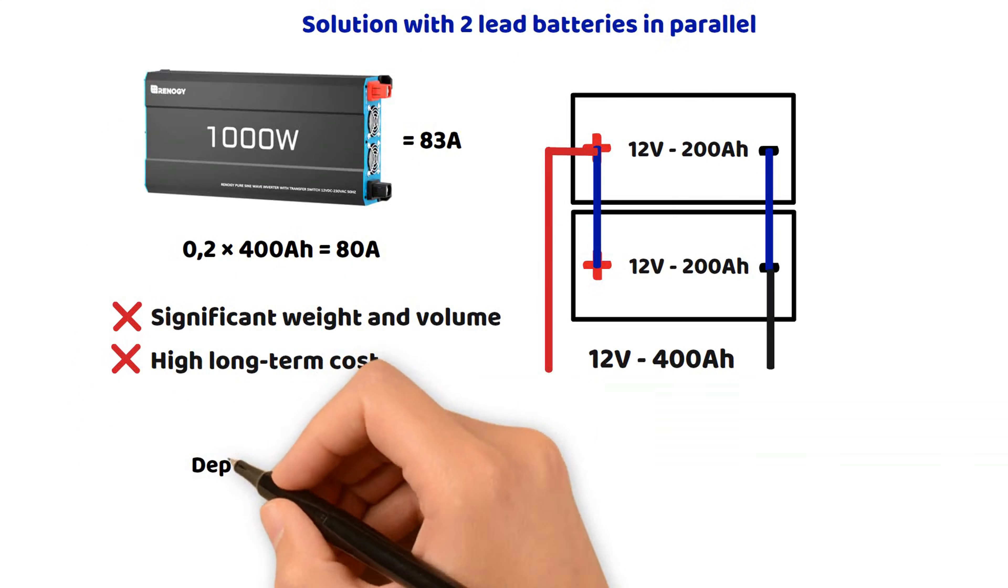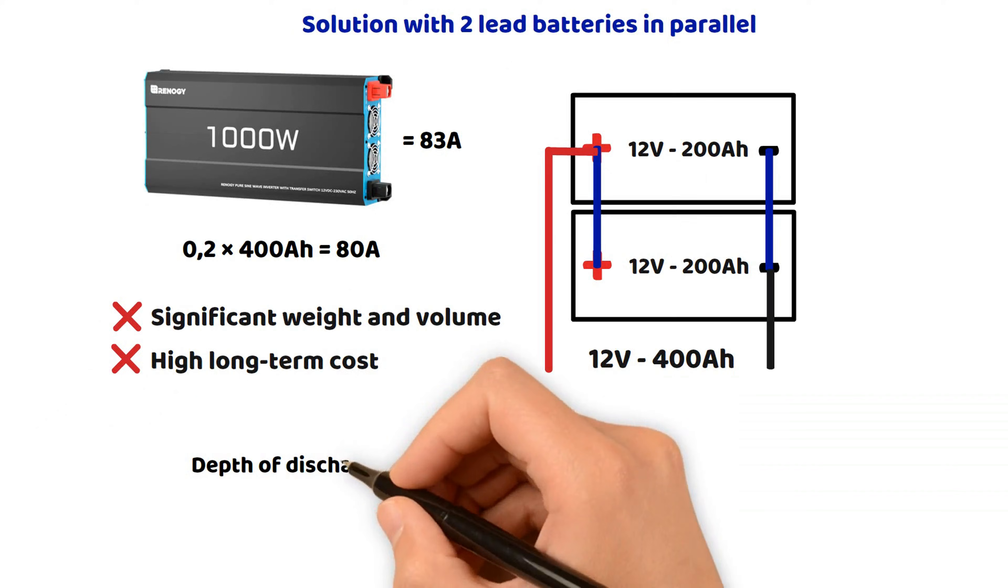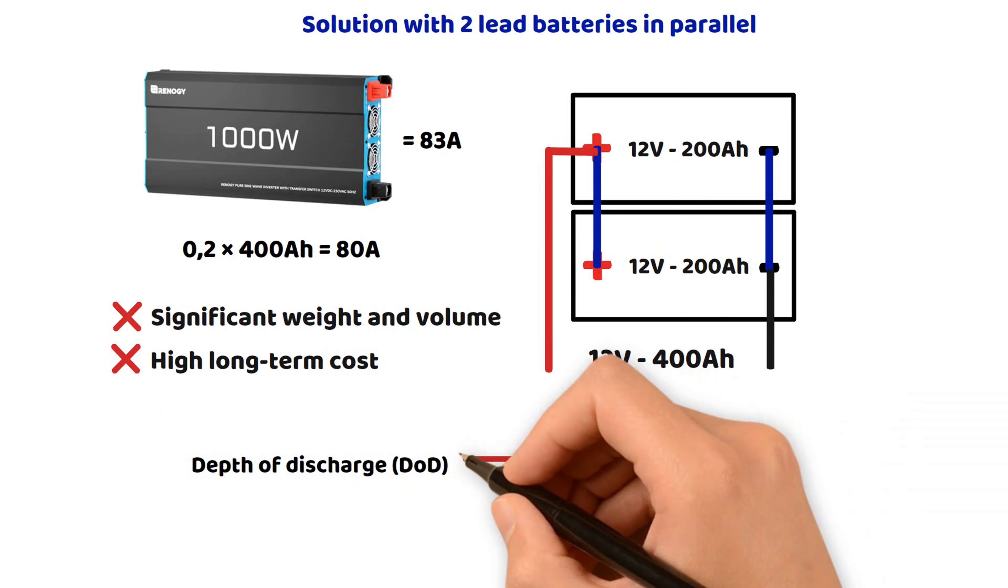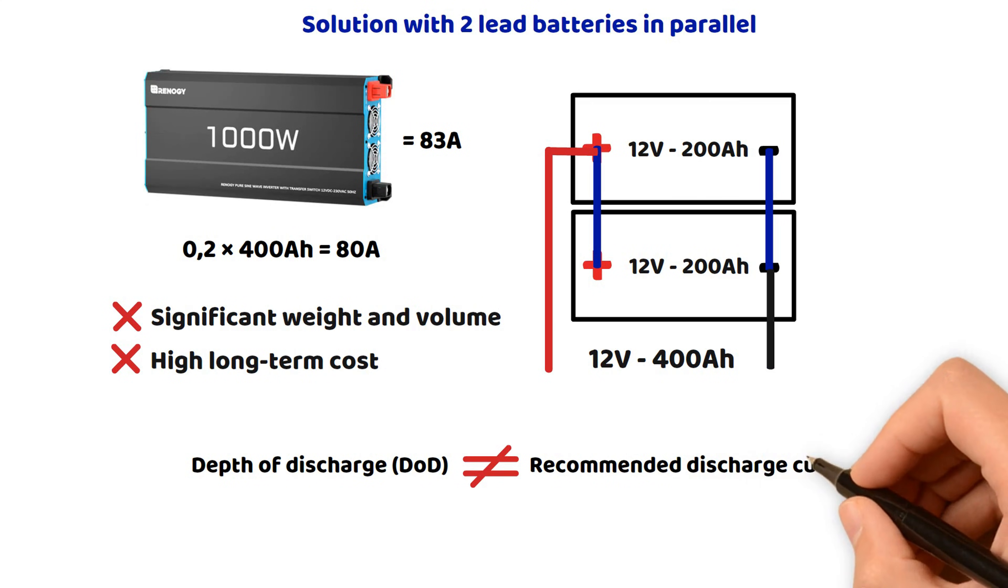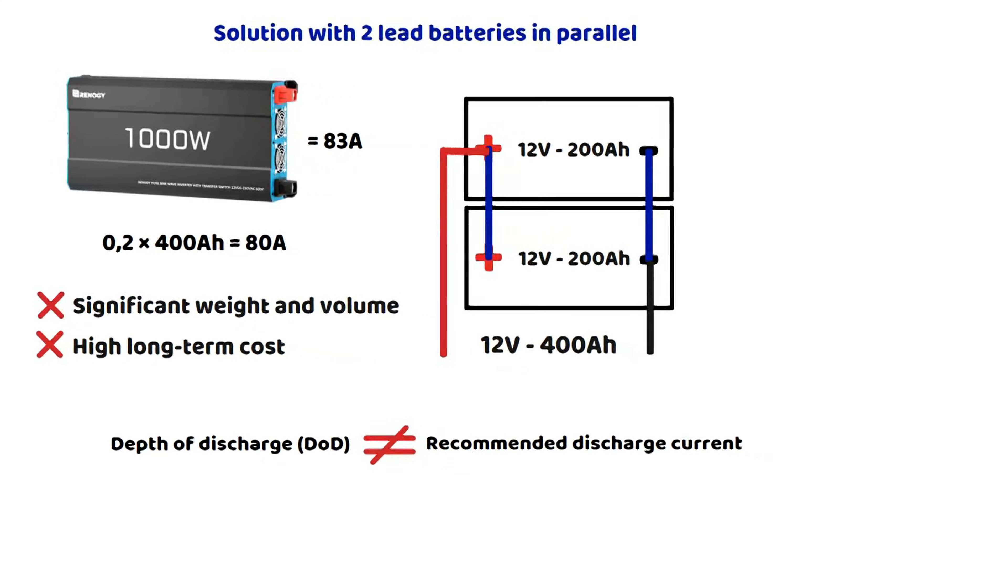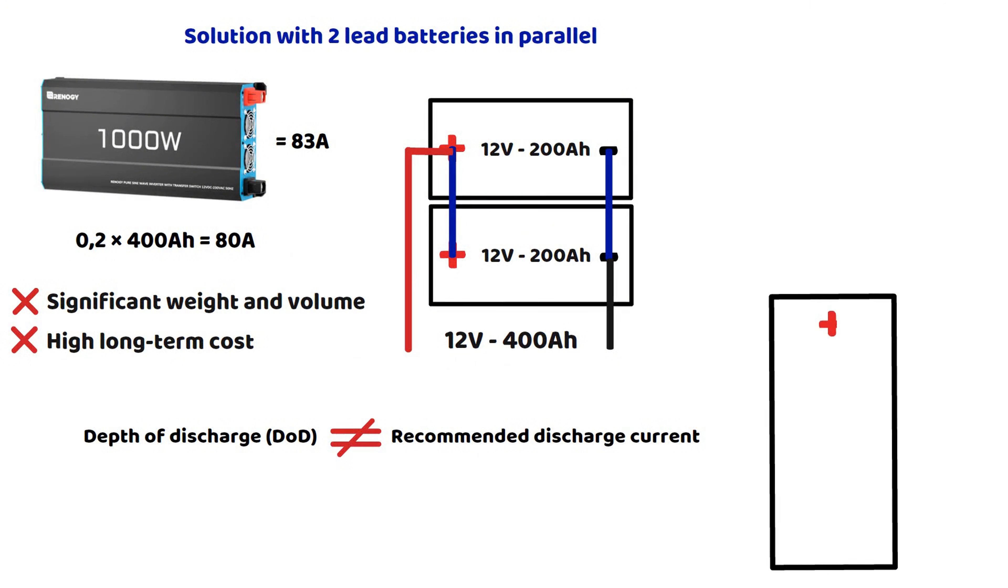For example, a battery used with a discharge limited to 20%, meaning only 20% of its capacity is consumed in each cycle, can offer up to twice as many cycles as a battery regularly discharged to 50%. The best compromise between usable capacity and longevity is often found around 80% of charge retained, which means moderate use of 20% per cycle. Yes, we are very far from lithium.